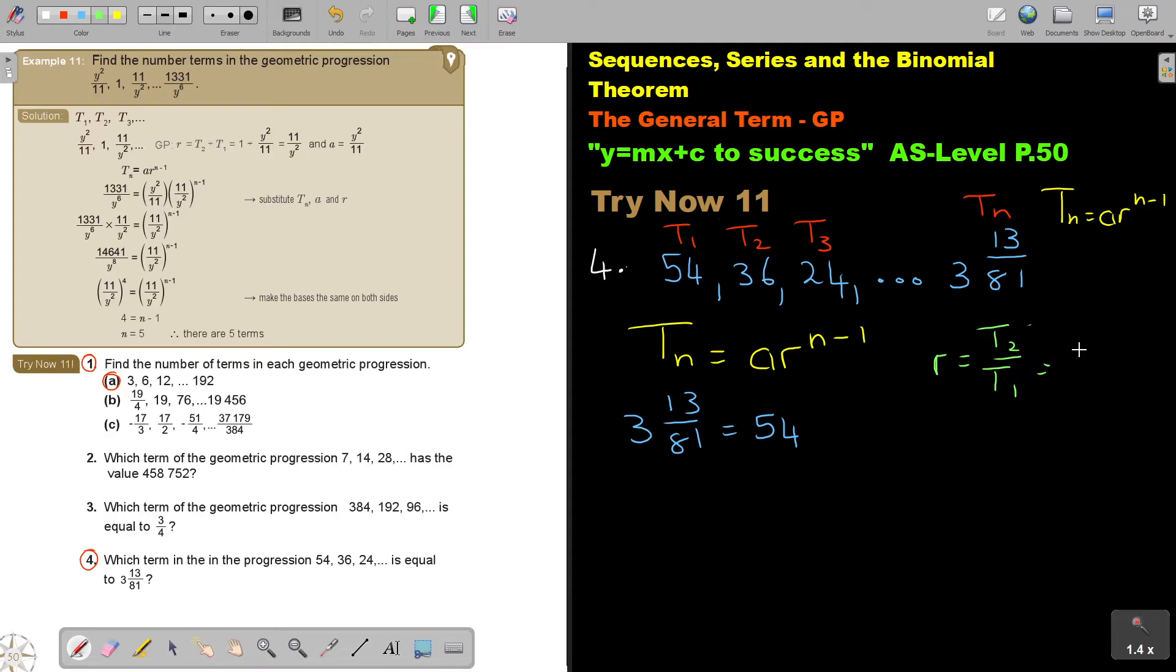So, I'm going back to this. 2 thirds. And then, I'm going to say N minus 1.